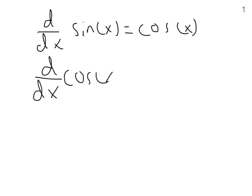So in the last video, we went over the derivatives of sine and cosine. If you'll recall, the derivative of sine of x is equal to cosine of x, and the derivative of cosine of x is equal to negative sine of x.